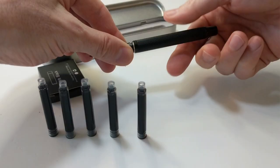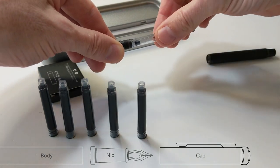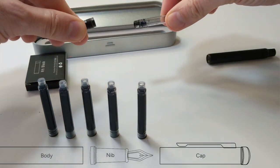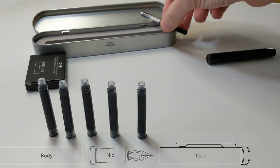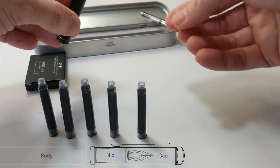So begin by unscrewing the body from the nib. Once you have that done, go ahead and remove the converter from the nib. Now, take the cap and put the nib back into the cap and secure it.